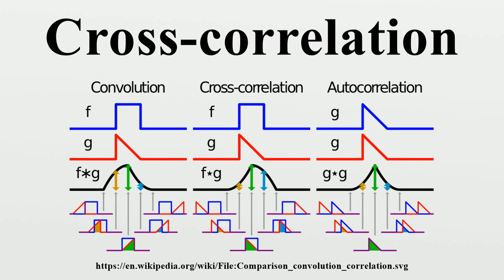As an example, consider two real valued functions differing only by an unknown shift along the x-axis. One can use the cross-correlation to find how much must be shifted along the x-axis to make it identical. The formula essentially slides the function along the x-axis, calculating the integral of their product at each position. When the functions match, the value is maximized.